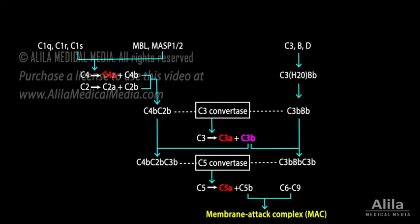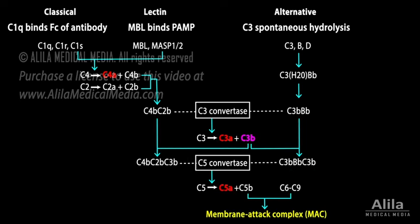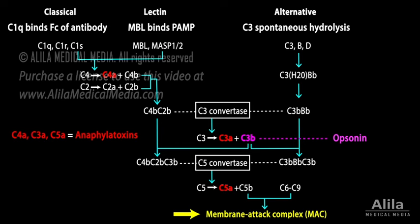There are three complement activation pathways: the classical pathway, lectin pathway, and alternative pathway. They are initiated differently but converge to produce the same set of effector molecules. These include opsonins, which bind to and target pathogens for destruction by phagocytes; anaphylatoxins, which activate mast cells and recruit phagocytes to the site of infection; and membrane attack complexes, which directly destroy bacteria.